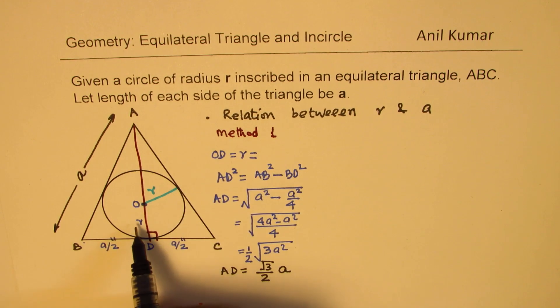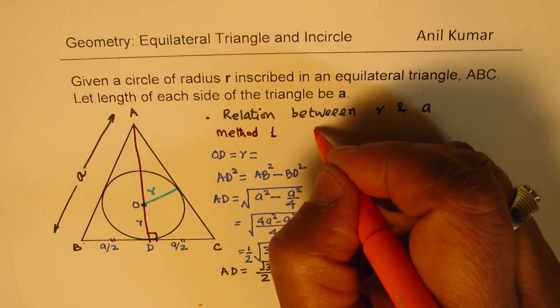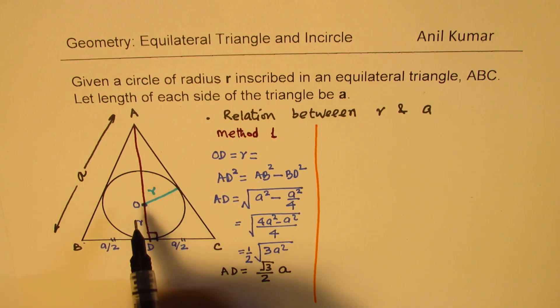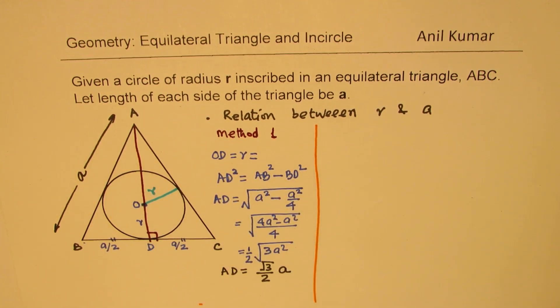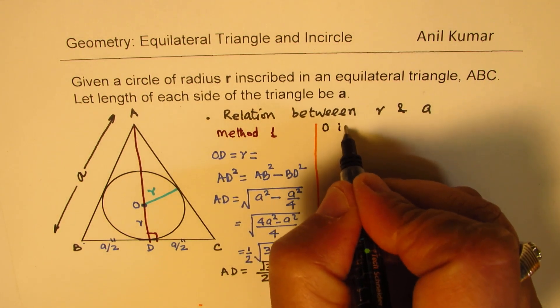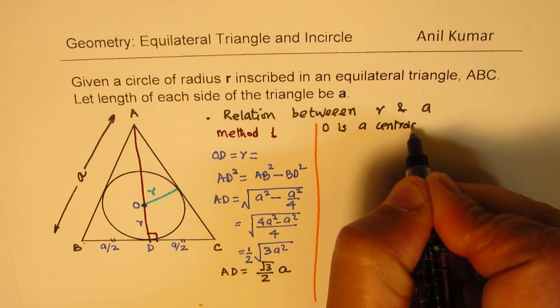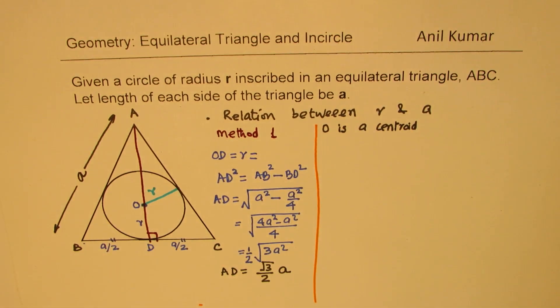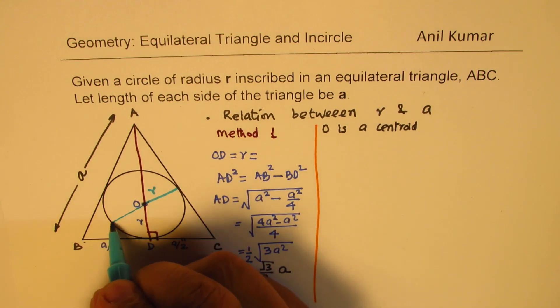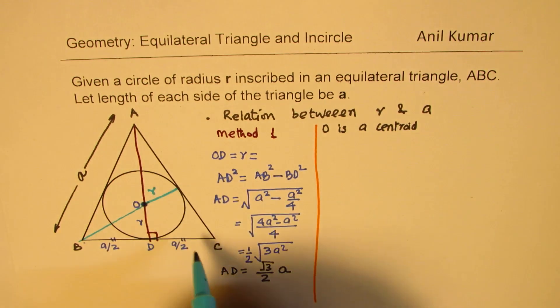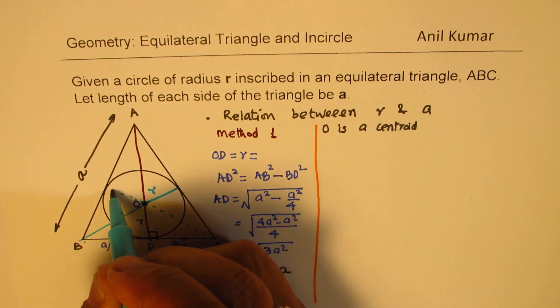But what we really need to find is radius r. So we're going to use another property of a triangle to find the radius. And that is, O is also the centroid. Centroid means that if I connect the medians, in that case, all the medians will intersect at a point. And that point is the centroid. In equilateral triangle, orthocenter and circumcenter are also the same points.